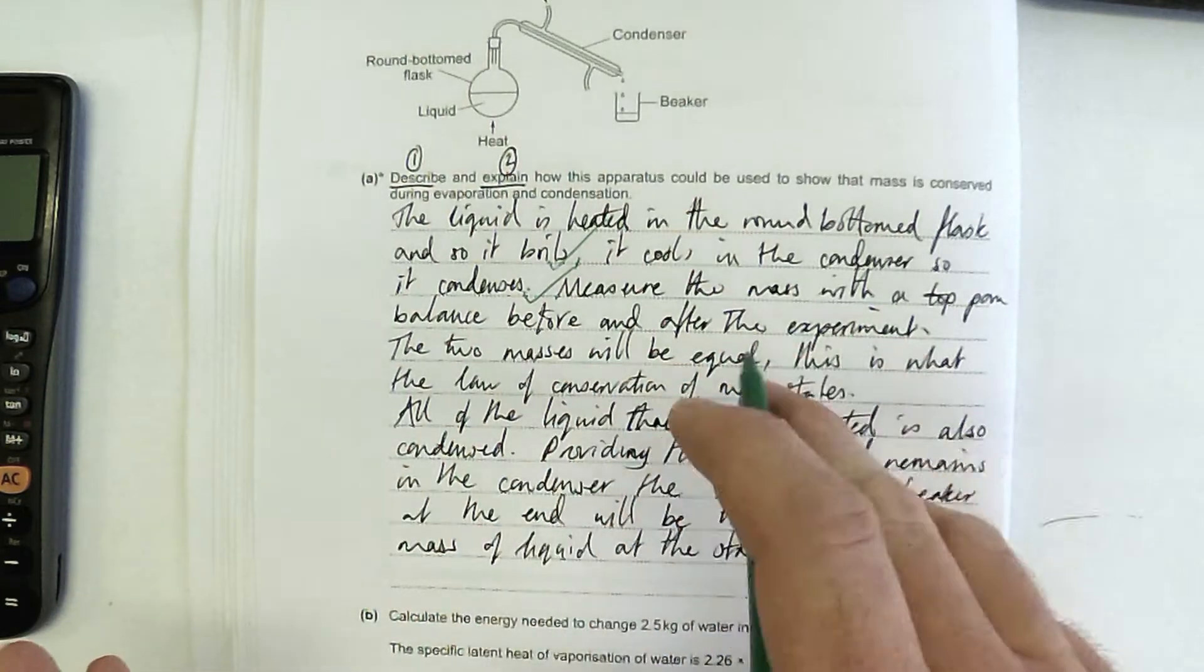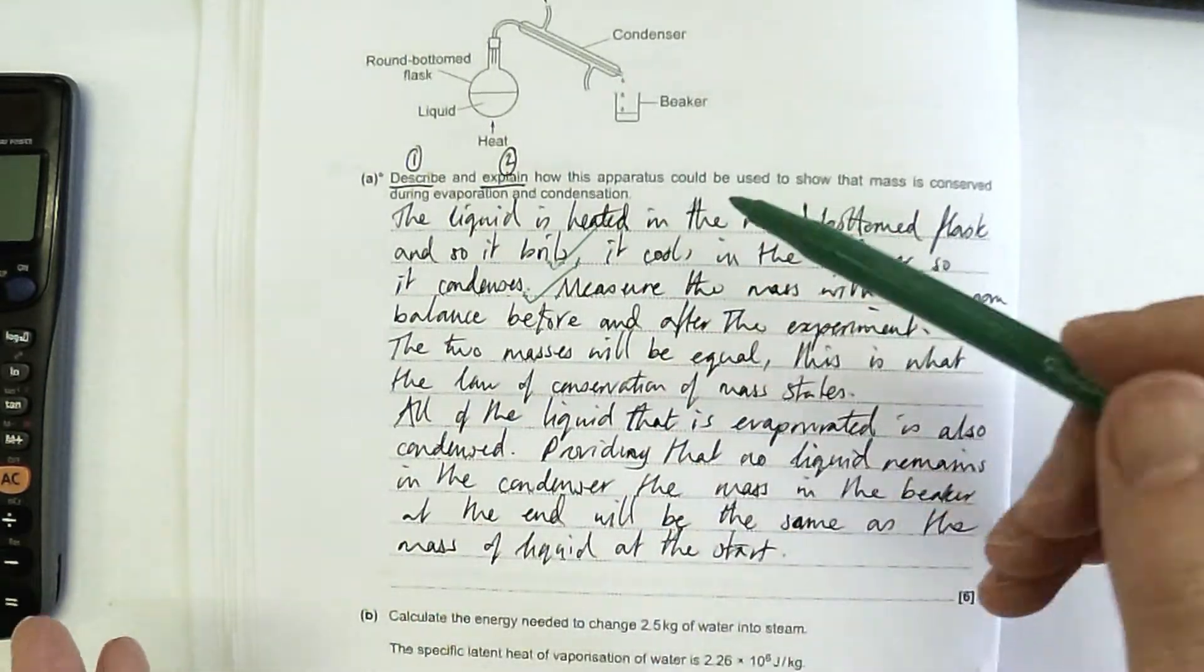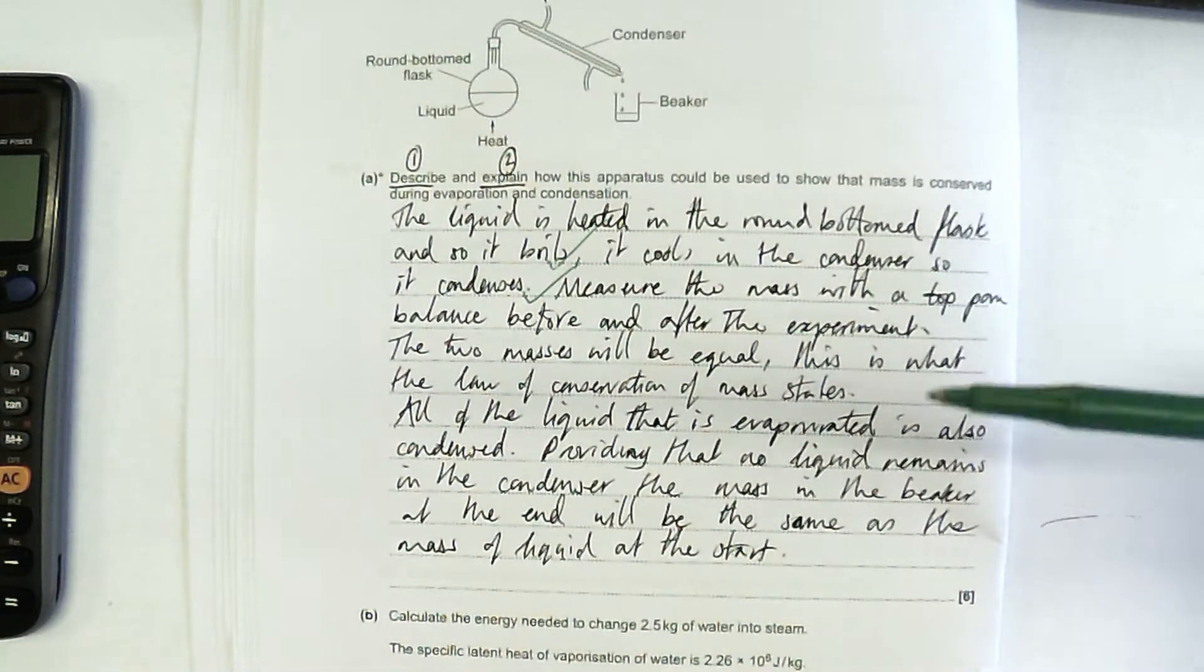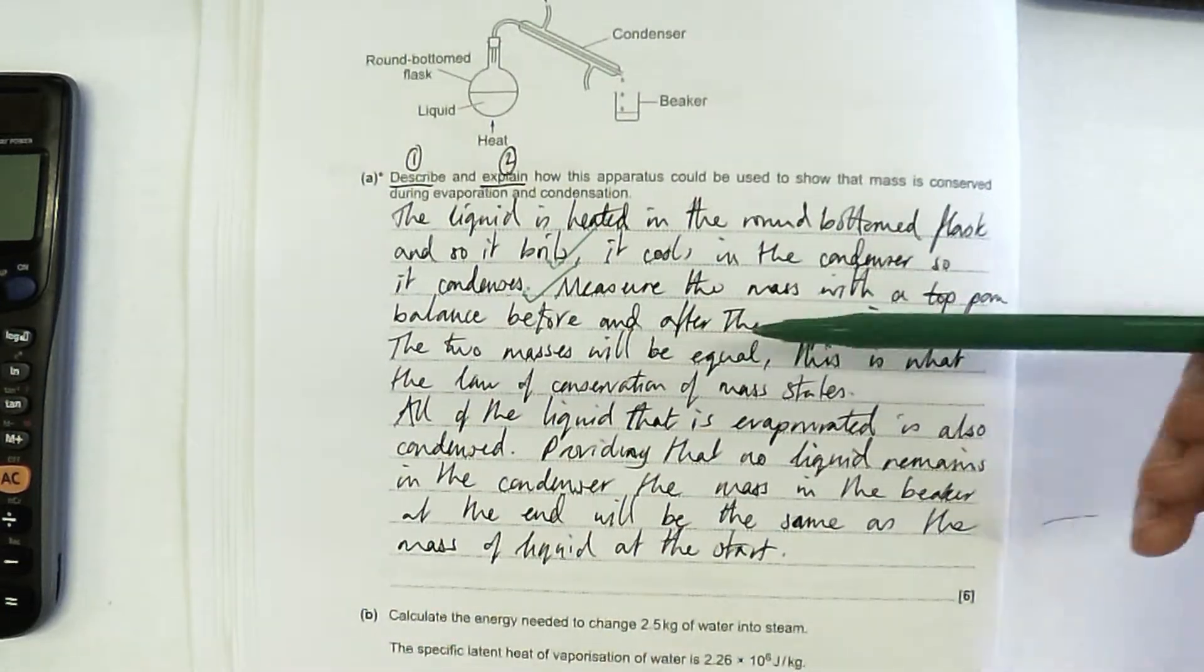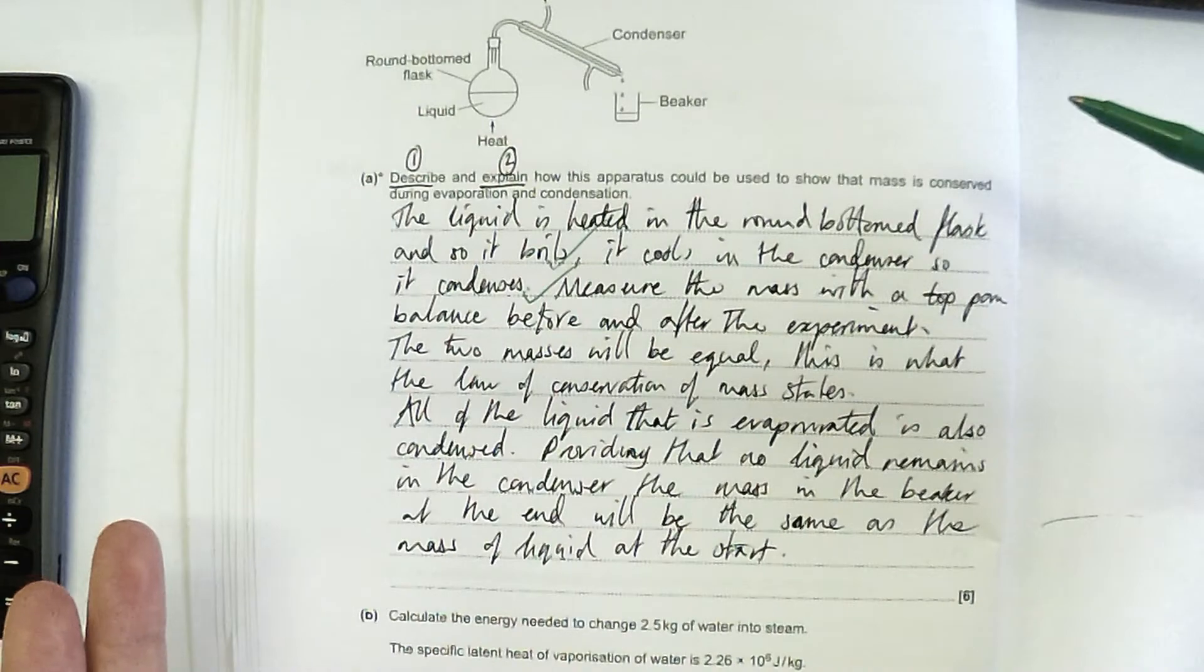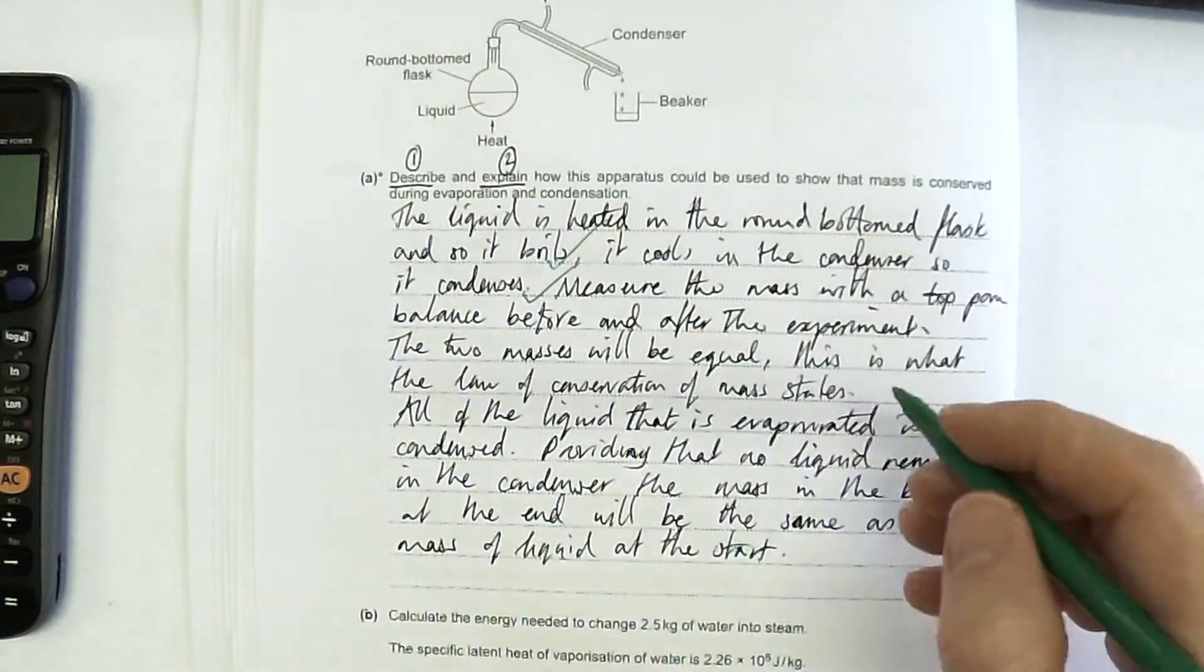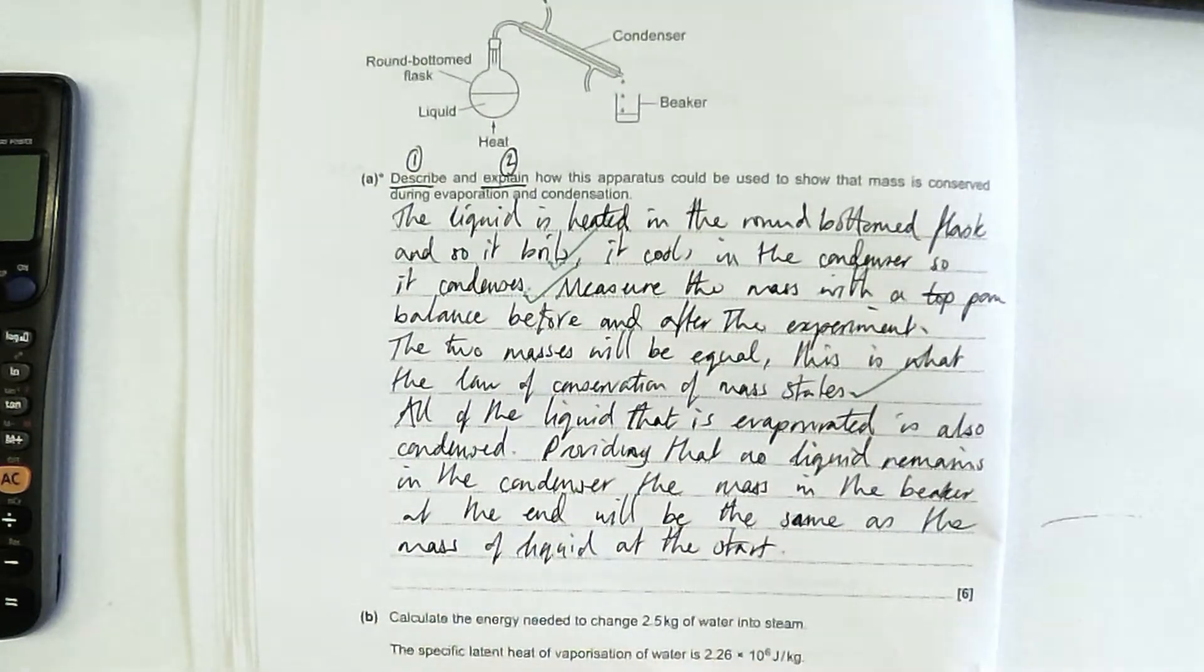If you look back through the question, they haven't actually said where it gets condensed or where it gets boiled. So you do get marks for saying that. Measure the mass with a top-pan balance before and after the experiment. The two masses will be equal. This is what the law of conservation of mass states. That's description of the law of conservation of mass.